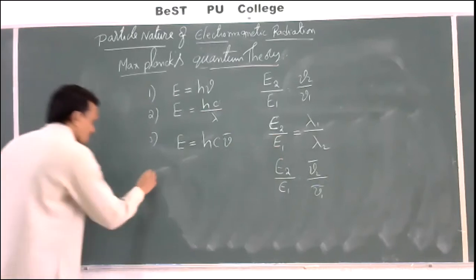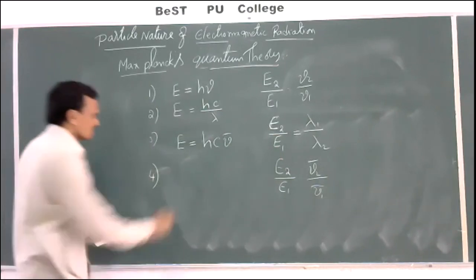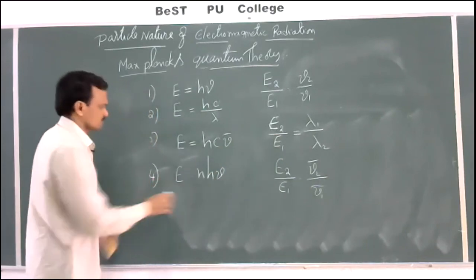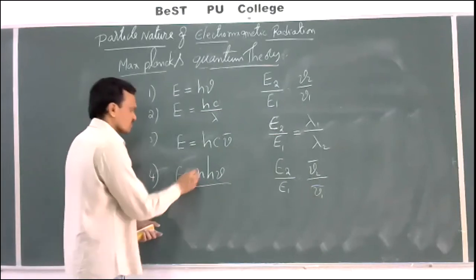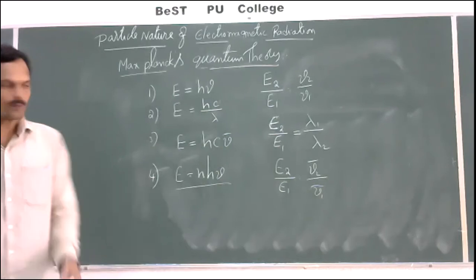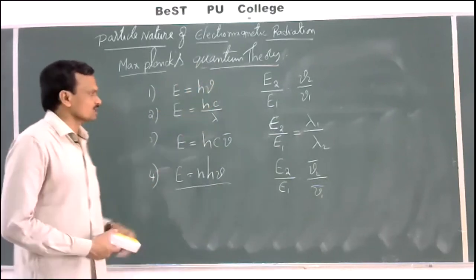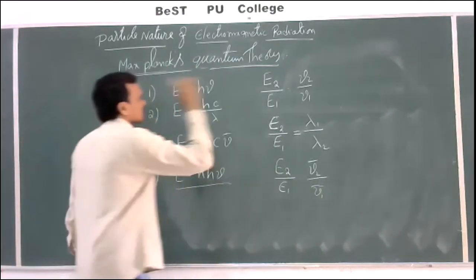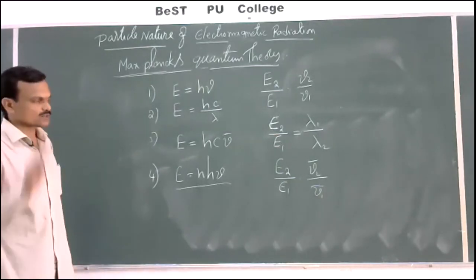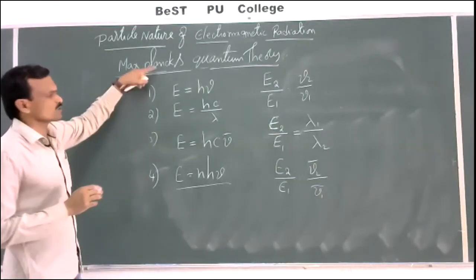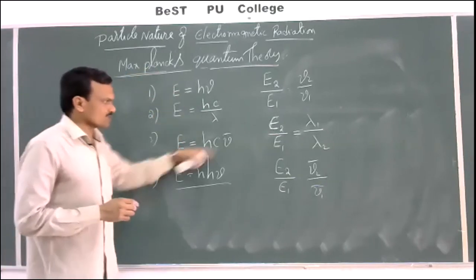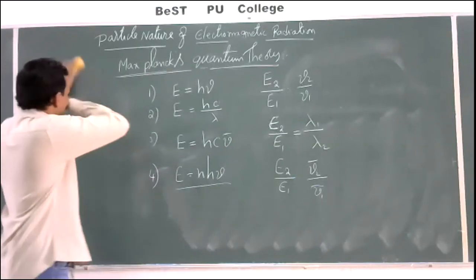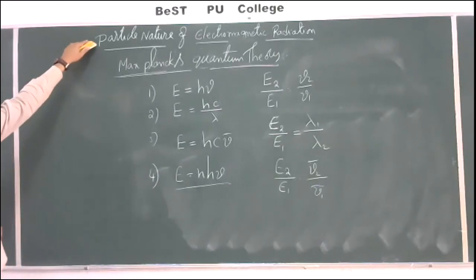To calculate total energy of radiation, use E = nhν. E = hν gives the energy of one photon; E = nhν gives the total energy of radiation containing n photons. Remember all these formulas — they will be used to solve problems. This is about Planck's quantum theory, which explains the particle nature of electromagnetic radiation.